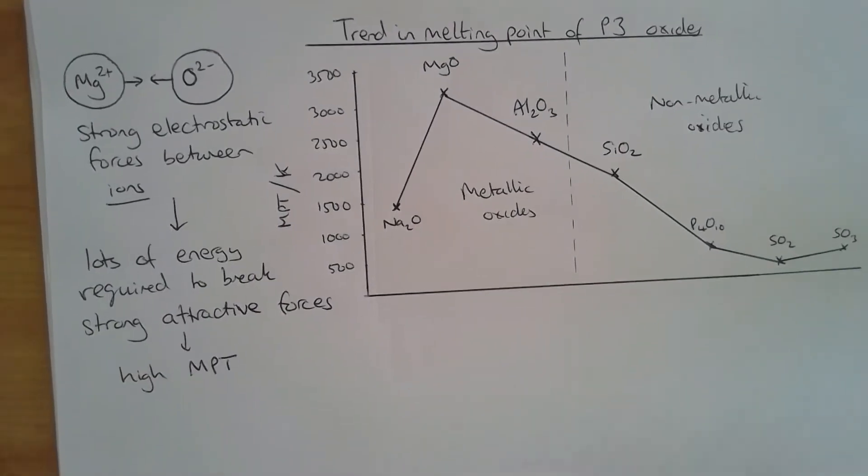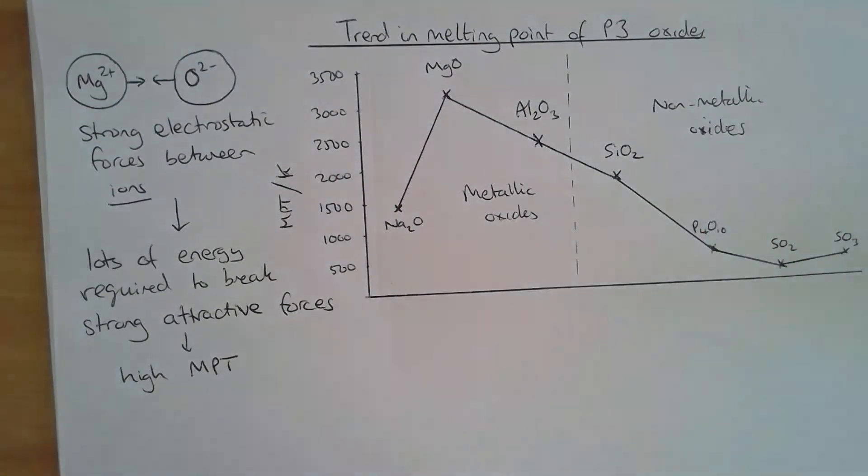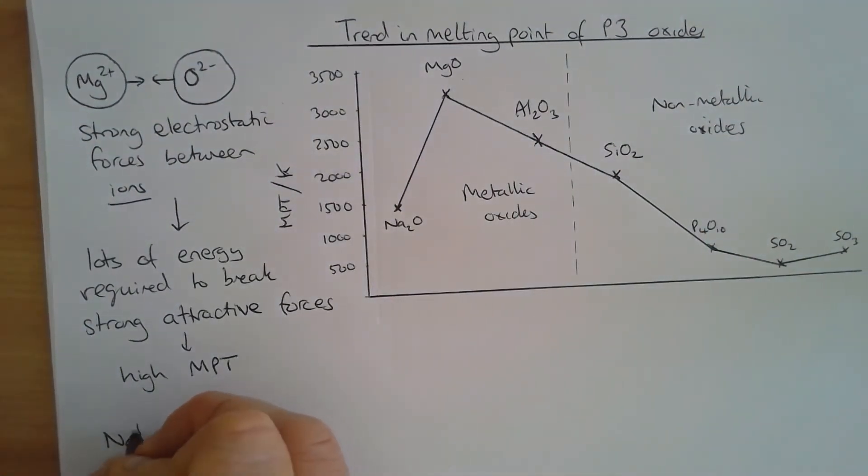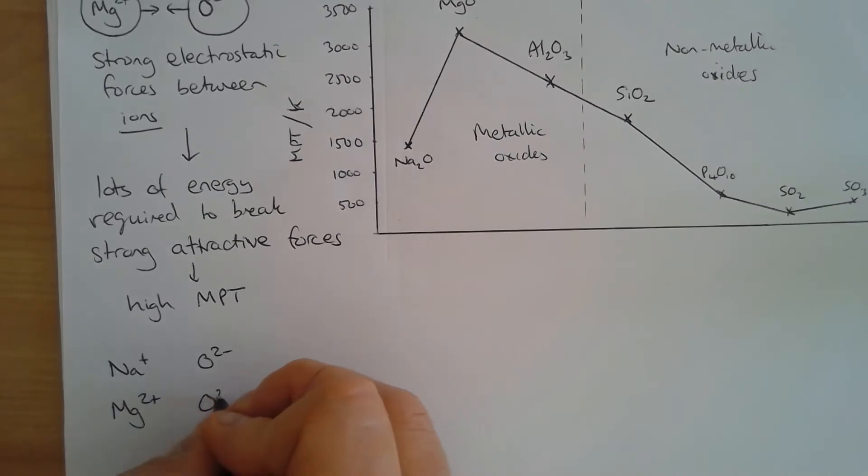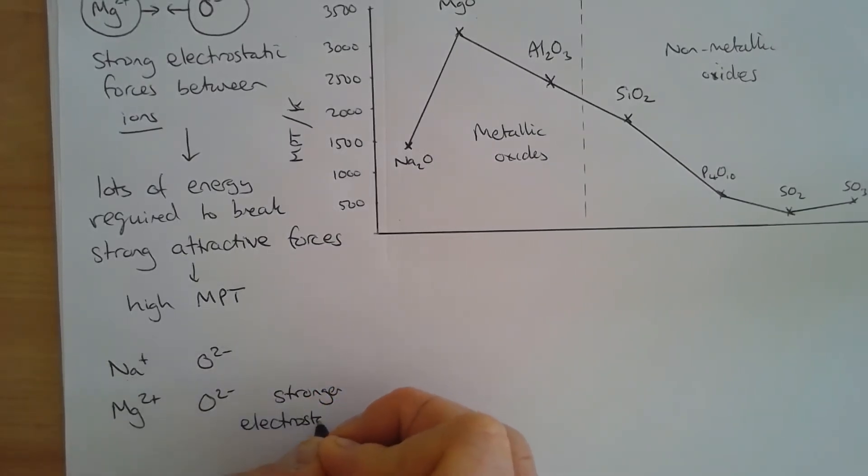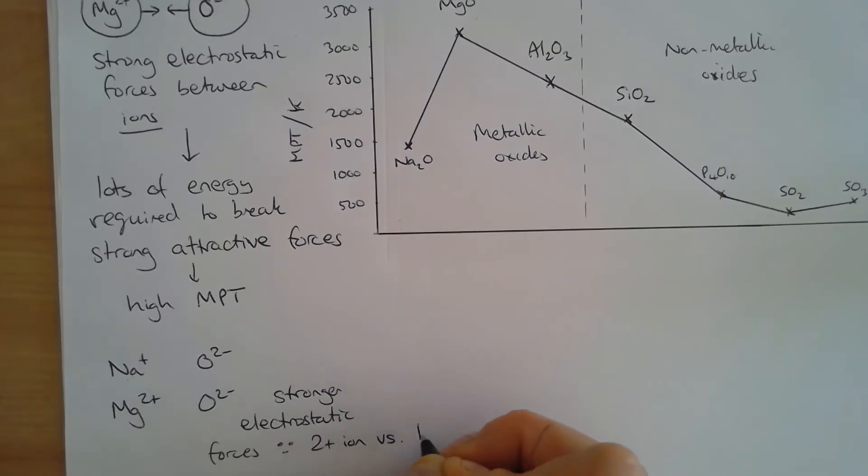Now, why do we have this trend from sodium oxide to magnesium oxide? Well, it's simply due to the fact that the sodium and the magnesium ion are almost identical in size. But Mg2+ has a greater charge than Na+. So we have stronger electrostatic forces. And that's because we've got a 2+ ion versus a 1+ ion.